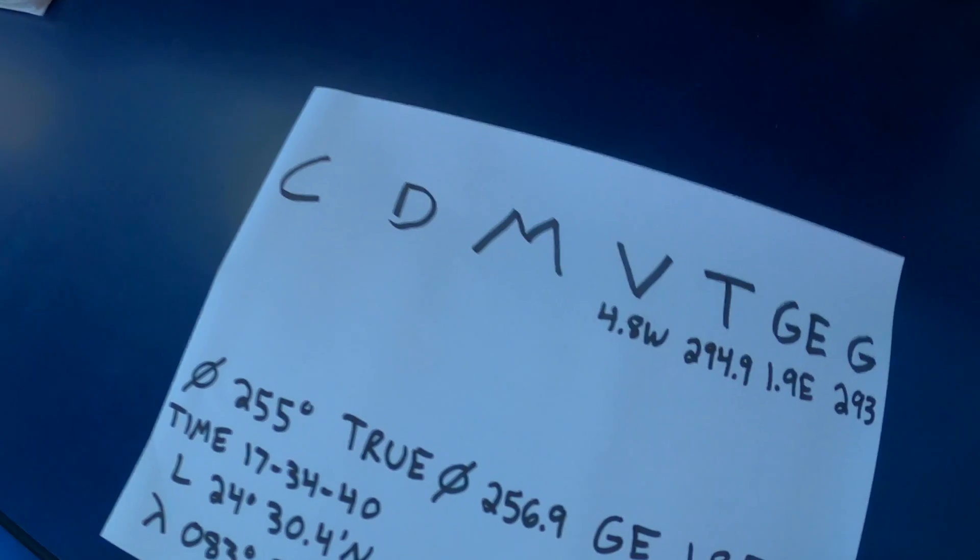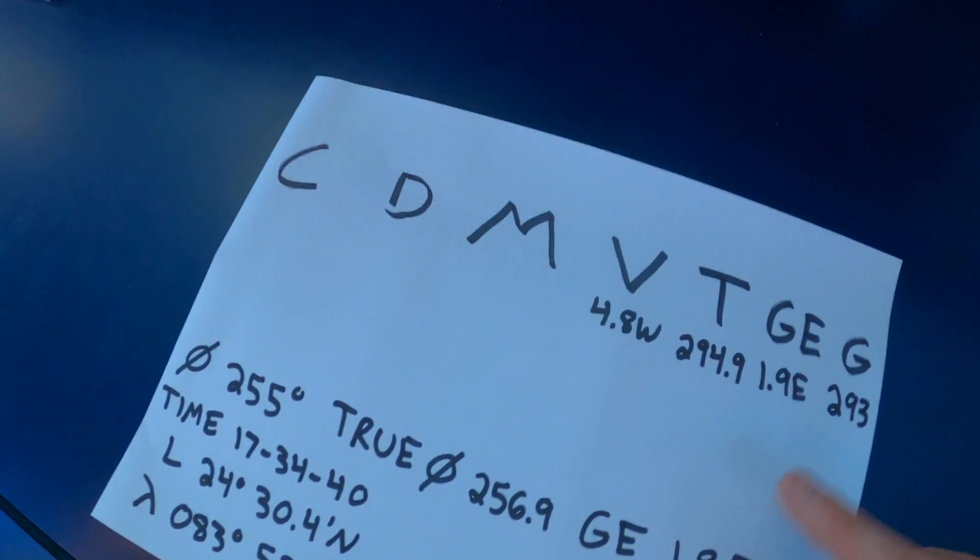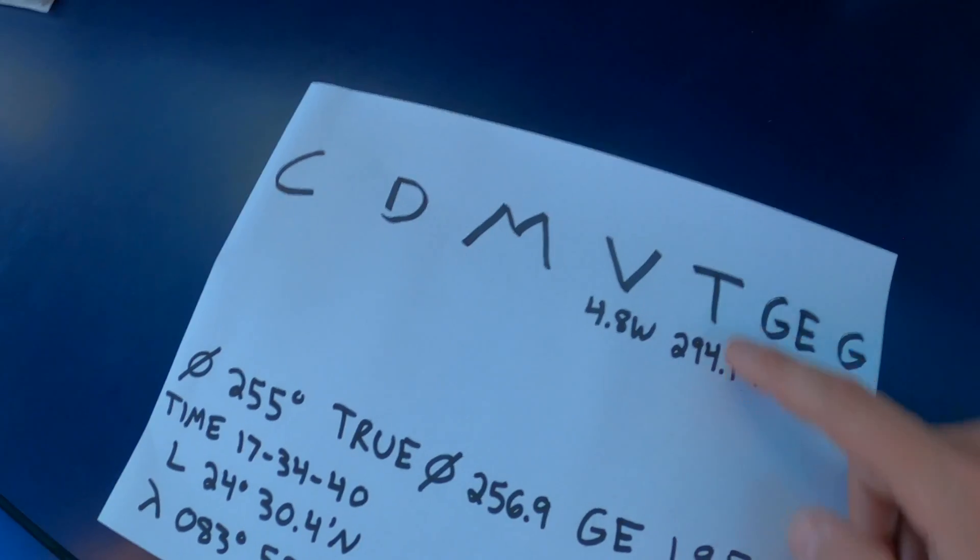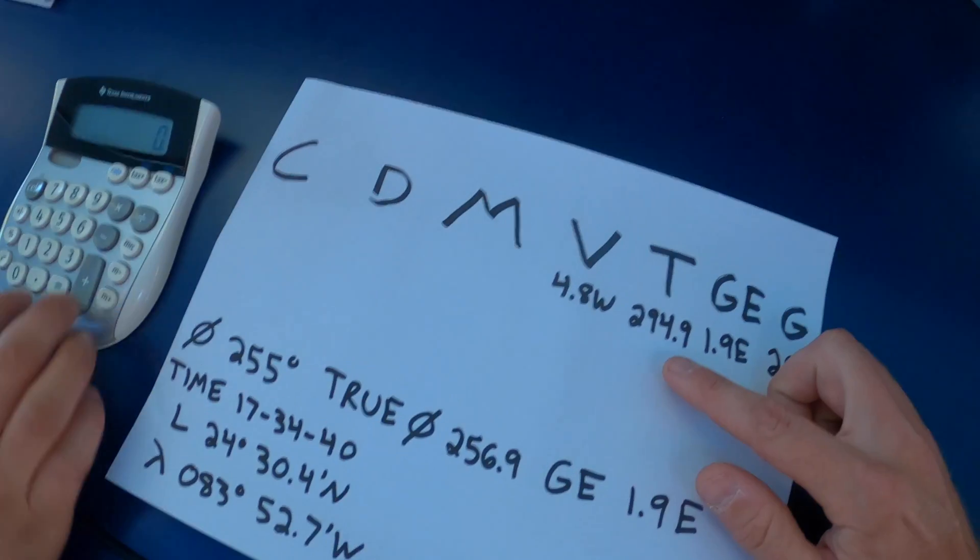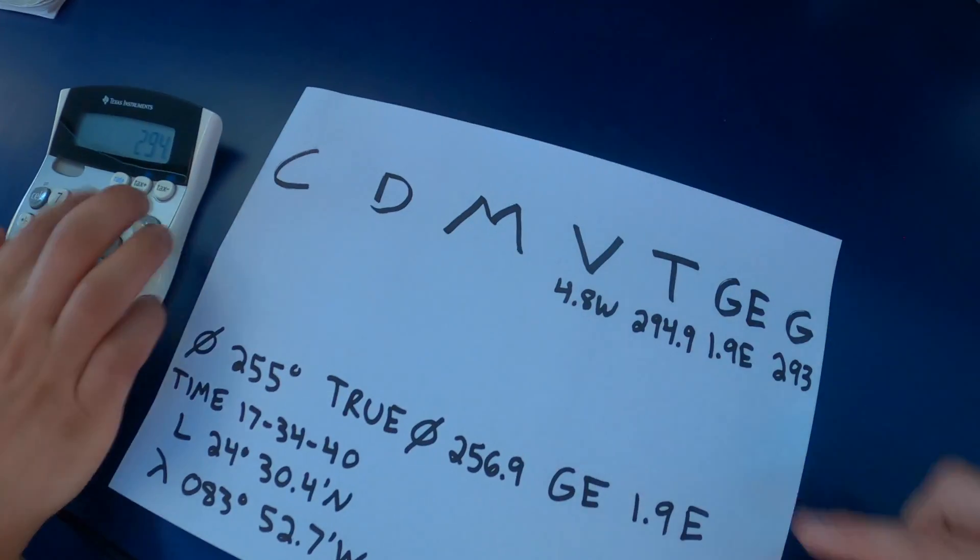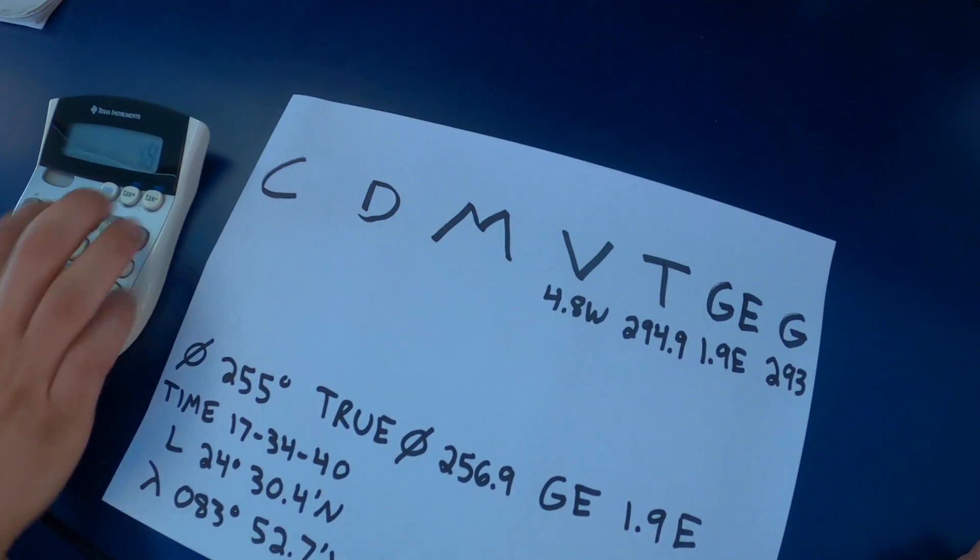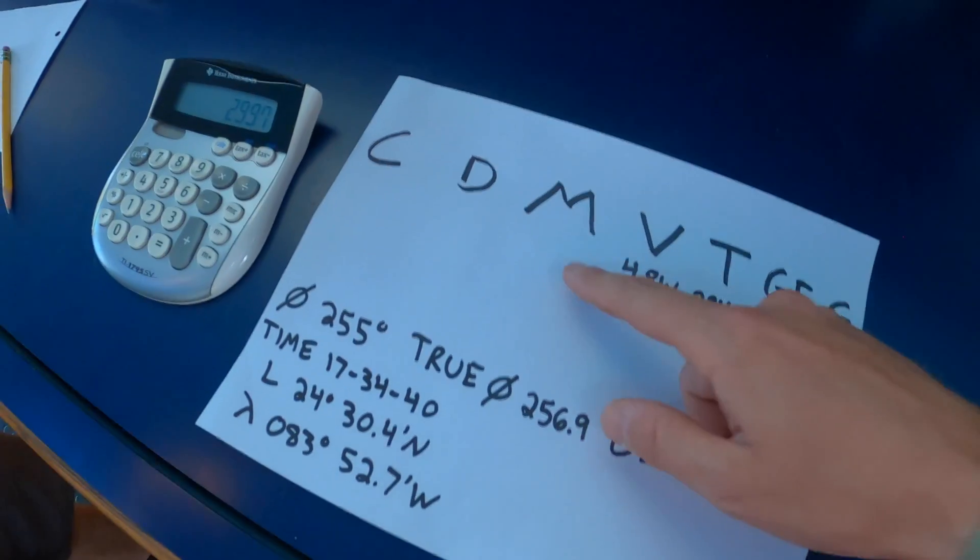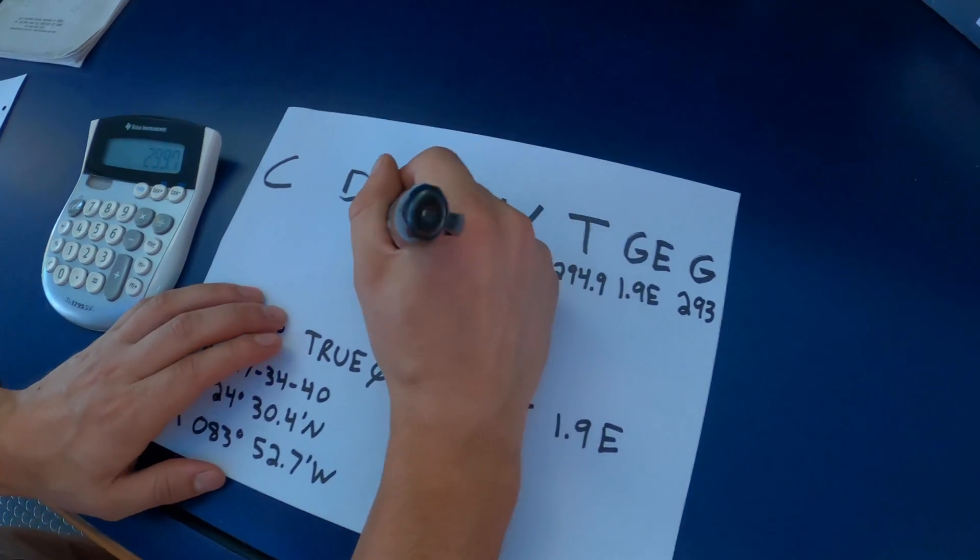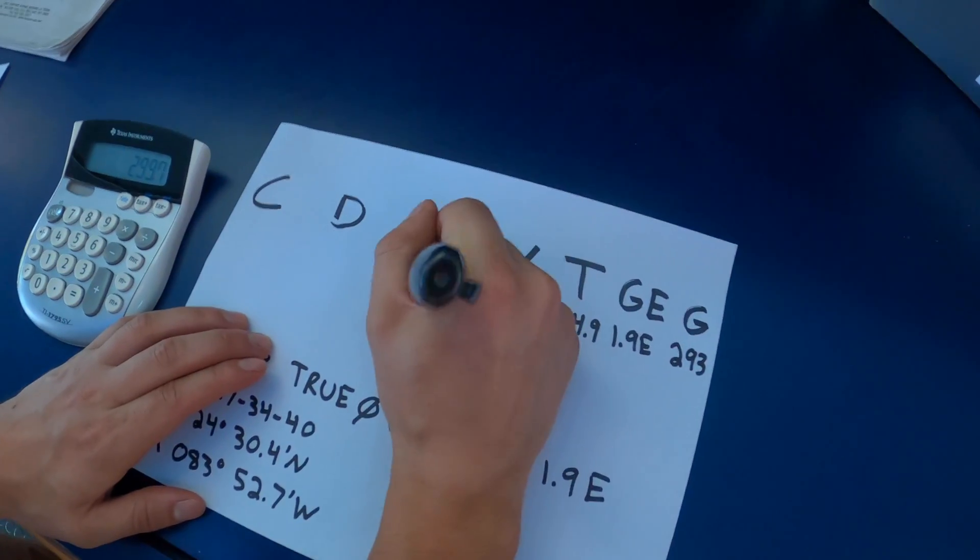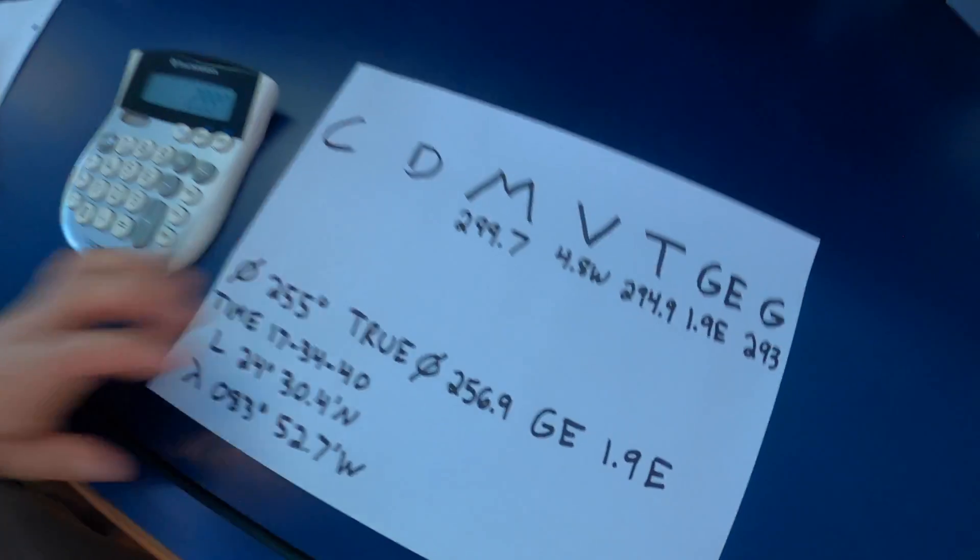And using the mnemonic device compass best, error west, we would add the variation to the true heading. 294.9 degrees plus 4.8 west, and that gives us a magnetic compass of 299.7.